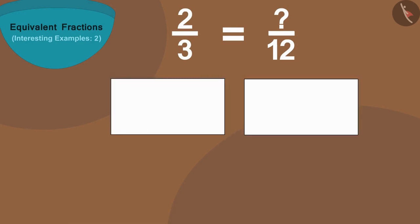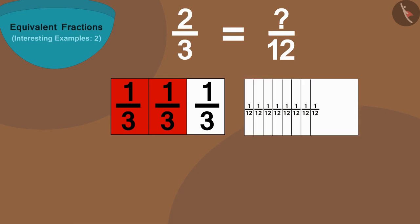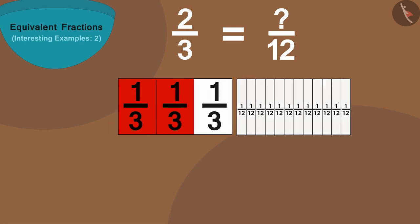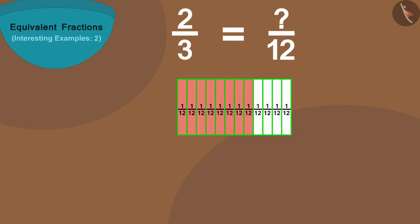If we take two equal length strips and divide one of them into three equal parts and the other into twelve equal parts, and then put the second strip on top of the first strip, we will find that three parts of the first strip are equal to twelve parts of the second strip.